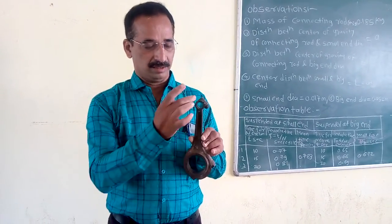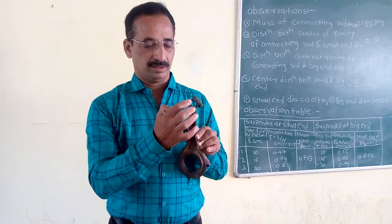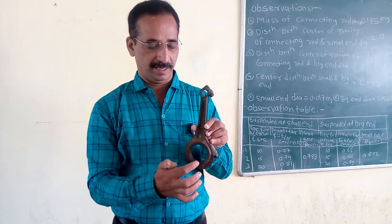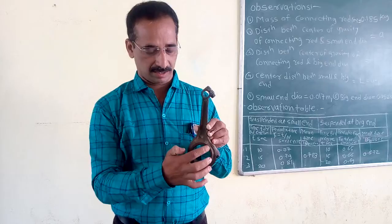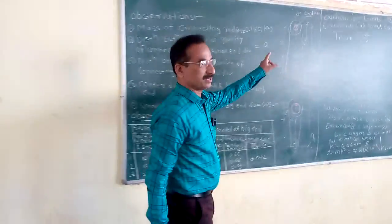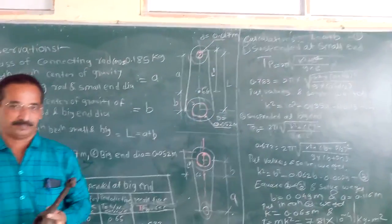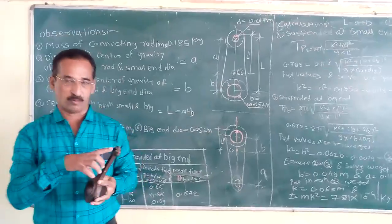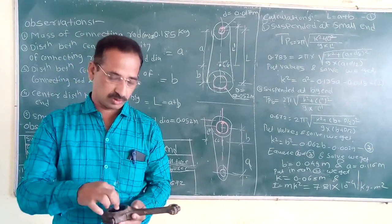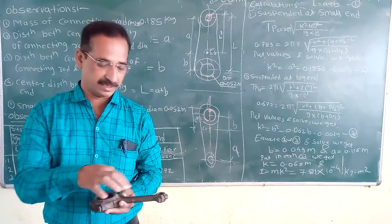In the manual, the mass of this connecting rod is given. Also, the small end diameter is given, that is small d. Also, the diameter of the big end is given, that is capital D. With the help of a Vernier caliper or scale, you can measure the distance between the two centers — the small end center and big end center — that is defined as L.